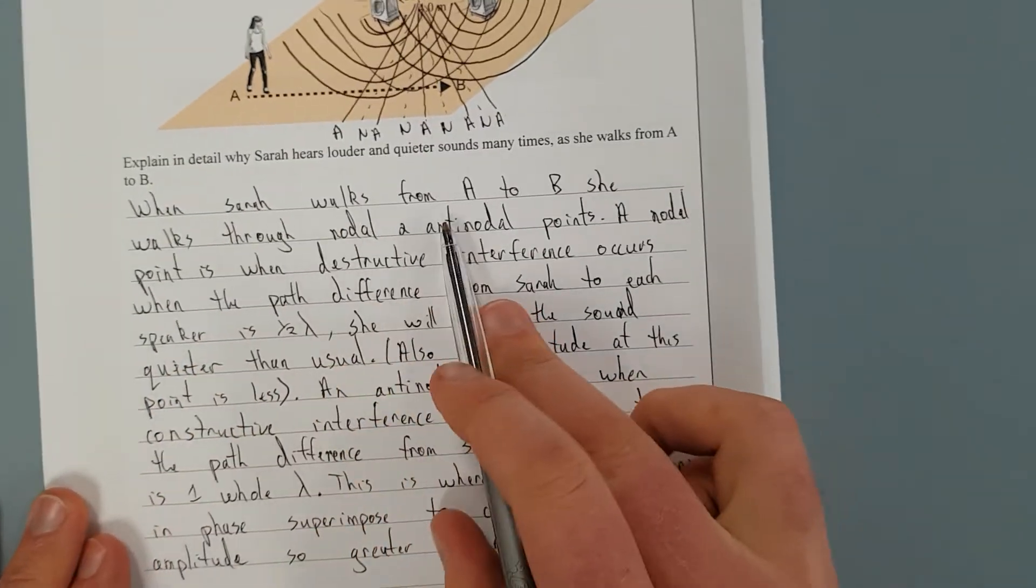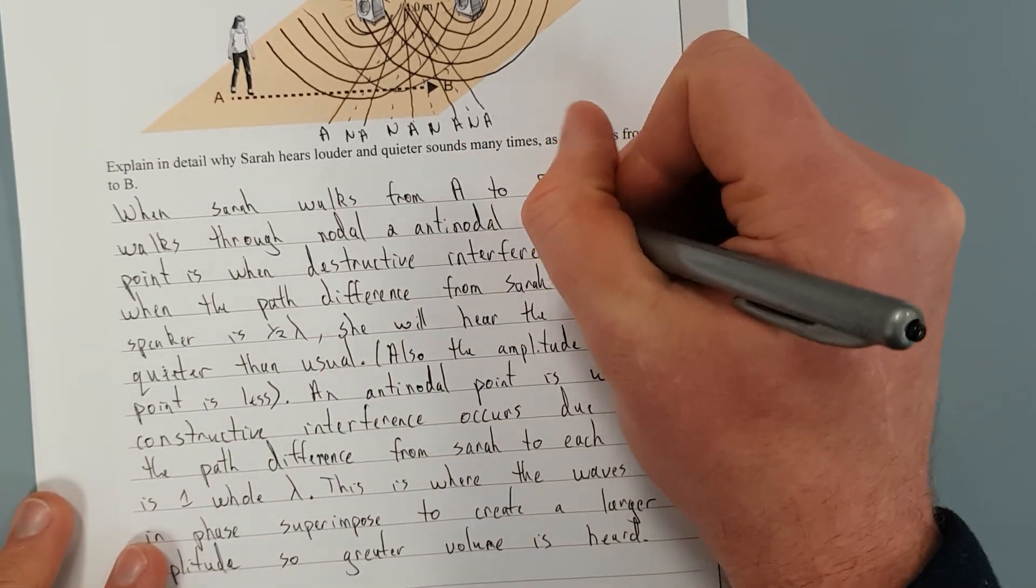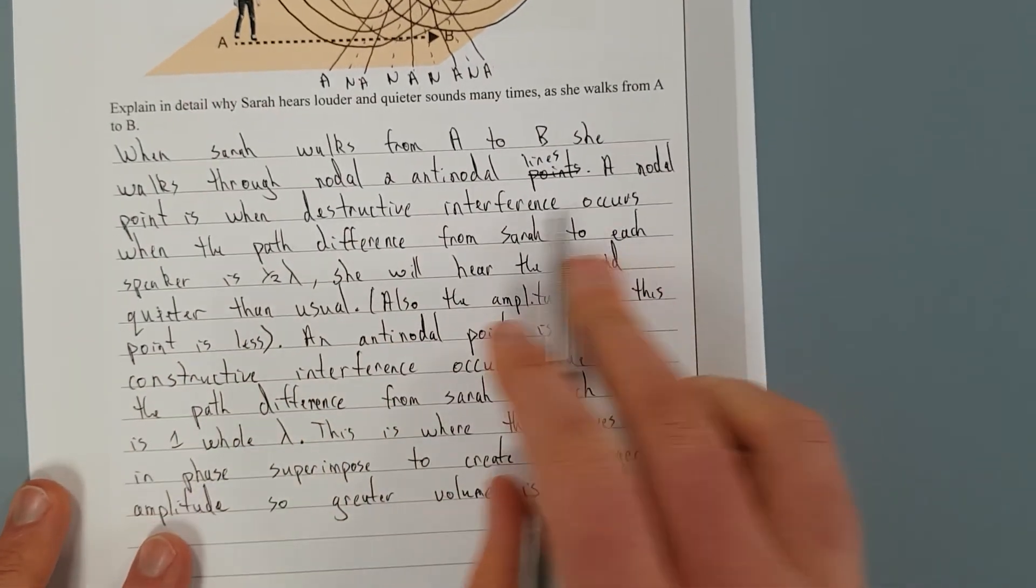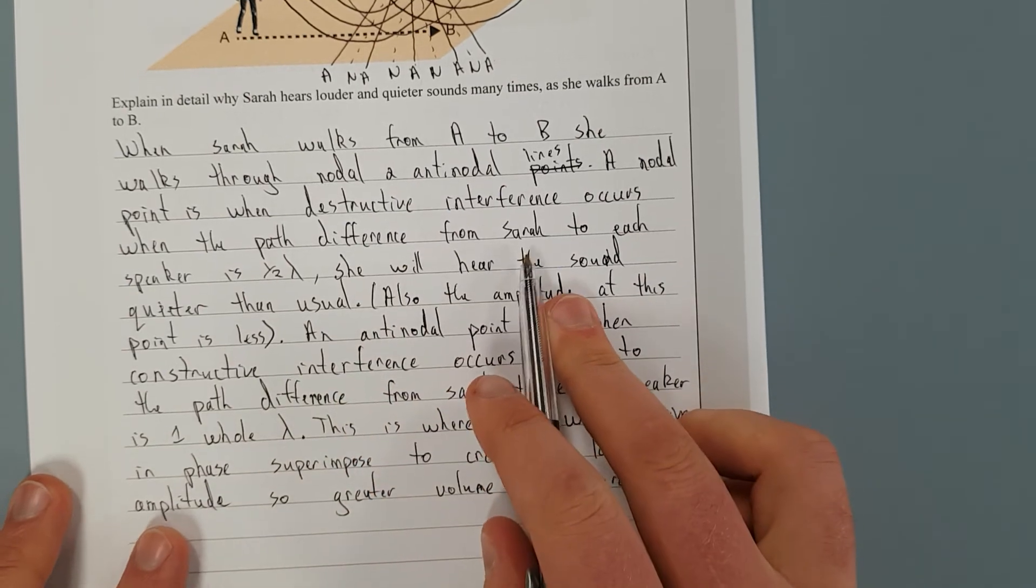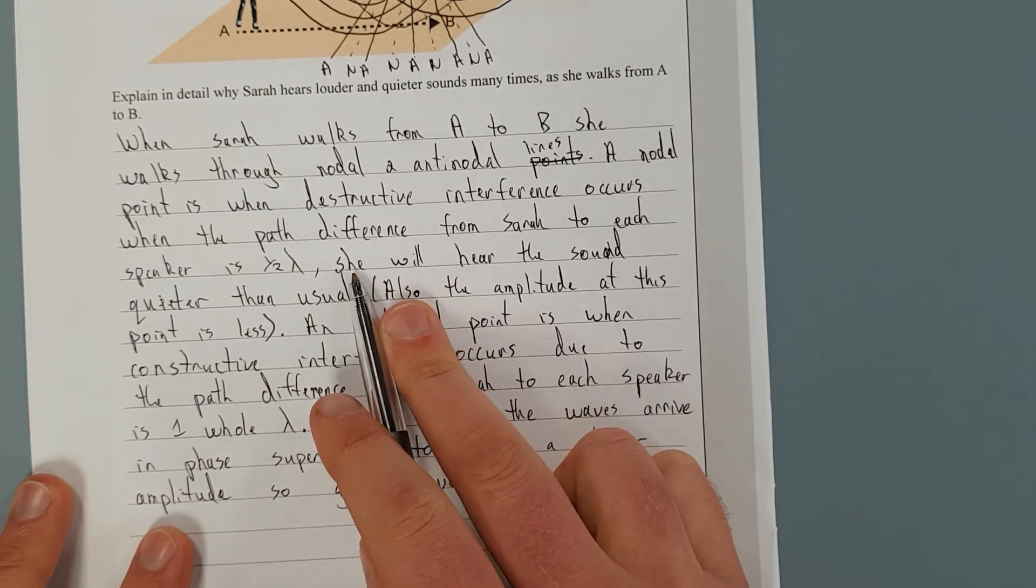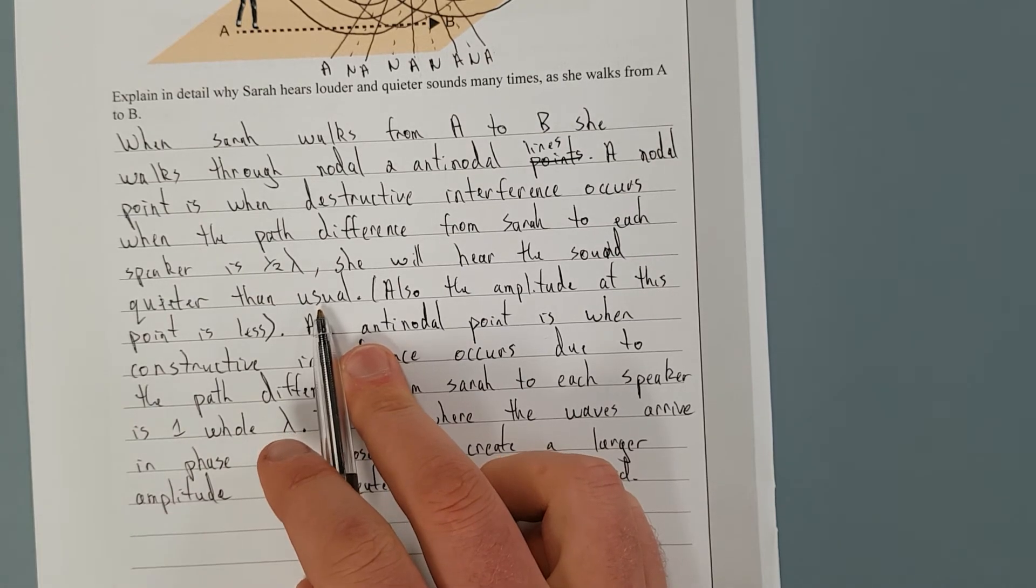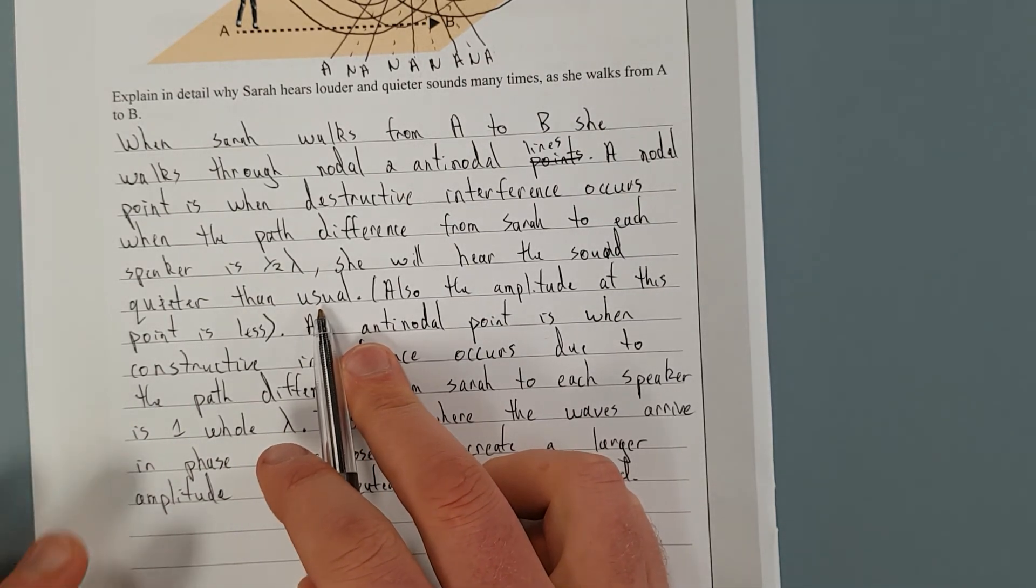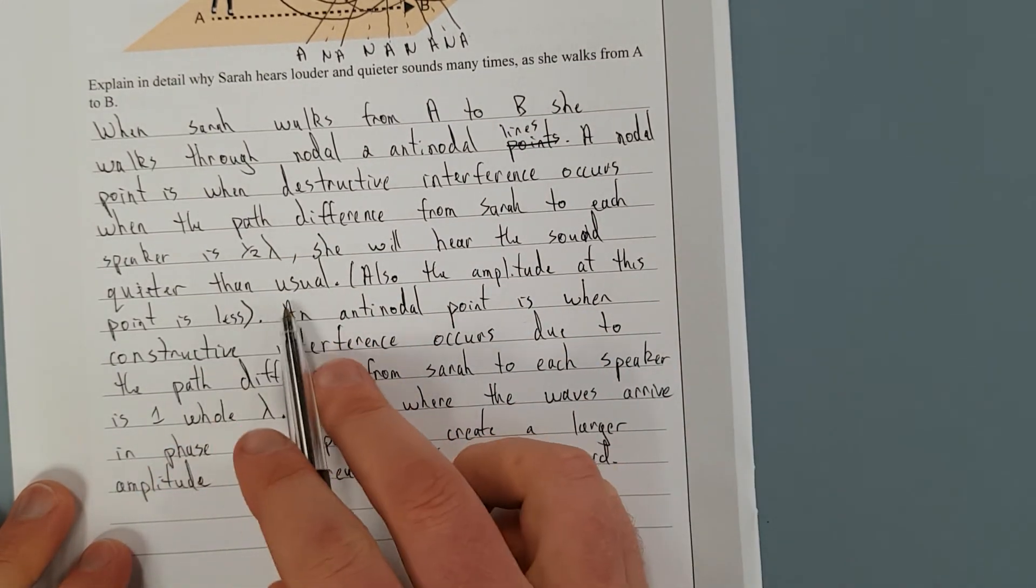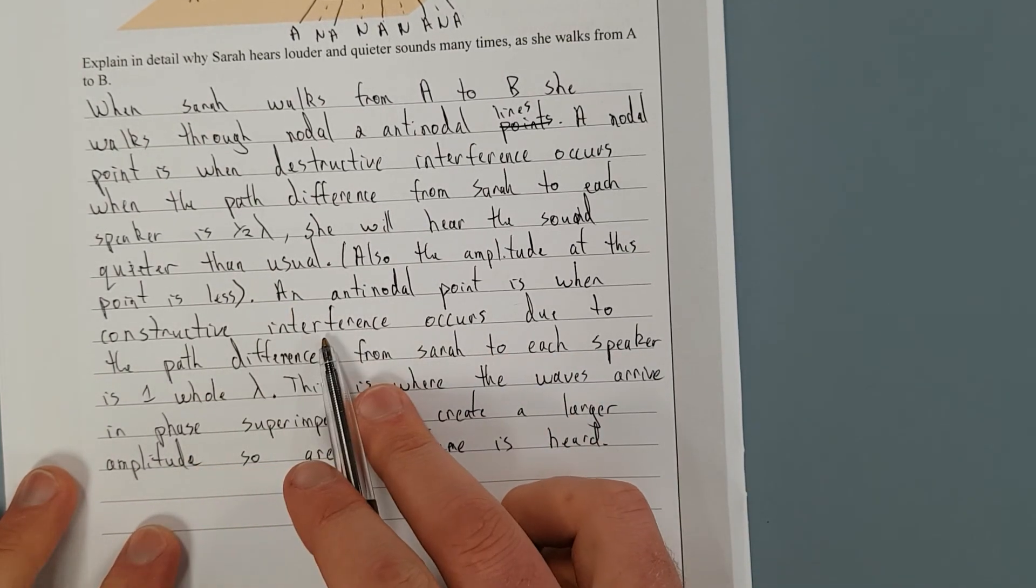I have said, when Sarah walks from A to B, she walks through nodal and anti-nodal points. A nodal point is when destructive interference occurs. When the path difference from Sarah to each speaker is half a wavelength, she will hear the sound quieter than usual. She'll still hear the sound because it bounces off the ground and all sorts. There's no way you can ever black out the sound. Also, the amplitude at this point is less. It's inferred because it's quieter than usual.